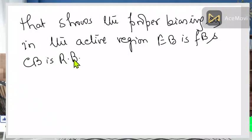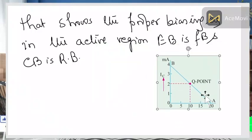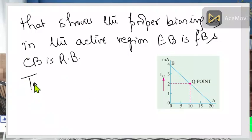This type of biasing is necessary but not sufficient for amplification. There are certain additional conditions. From the load line, the first thing is solved — now we need to find where the Q-point lies. To calculate the Q-point, we find the emitter current and the collector current.